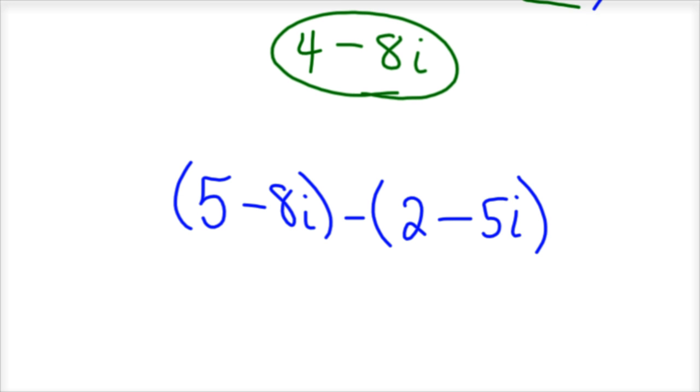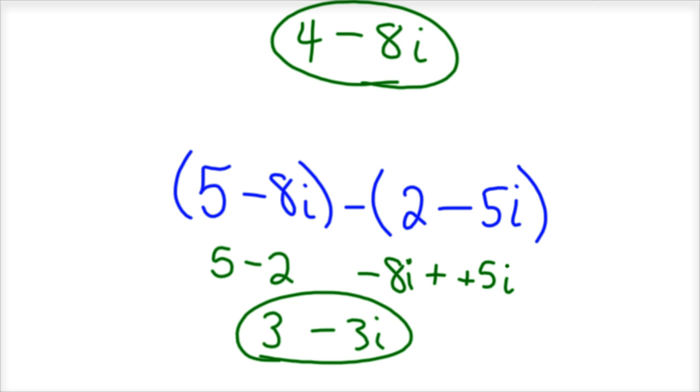If you subtract the second two, 5 minus 2 is 3, and negative 8i minus a negative 5i, again, plus a positive, would be, oops, I forgot the i there. So we'd have 3 minus 3i, in that case. And there's your imaginary, or complex number.